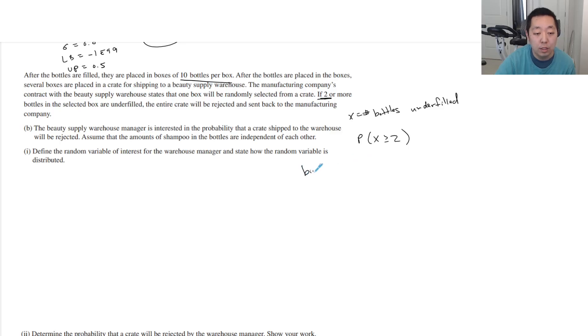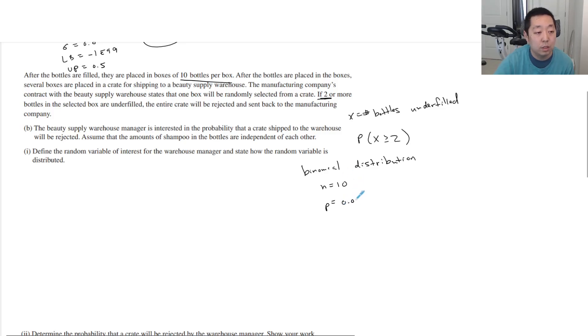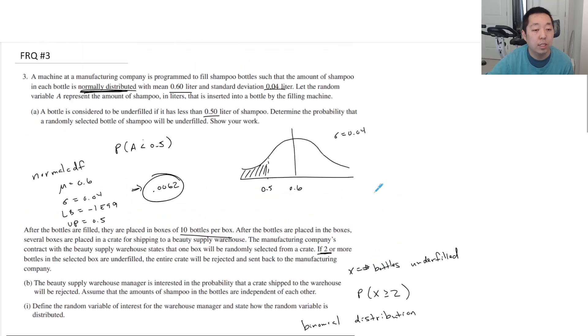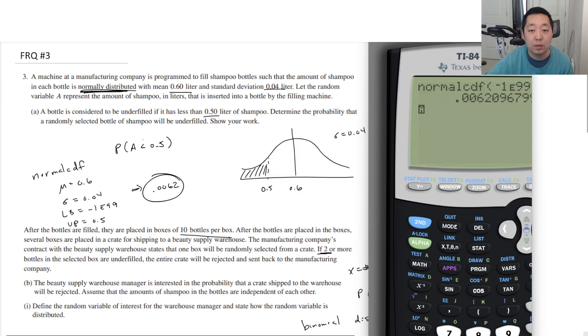This is a binomial distribution. I would always identify the distribution and say the number of trials is 10, and the probability that they're underfilled is what we got in the previous one, which was 0.0062. I got a really small number. Did I do that right? I don't know, it seems really small to me. Let me double check what I put in here.